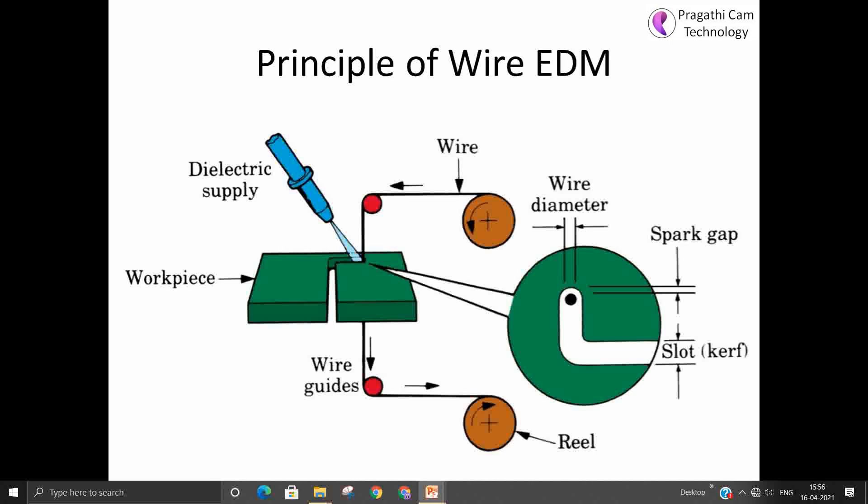That is around 8000 degree to 12000 degree centigrade. So this gap is continuously maintained between the workpiece and the tool. Due to that, whatever profile you want, you can cut by the wire EDM machine.